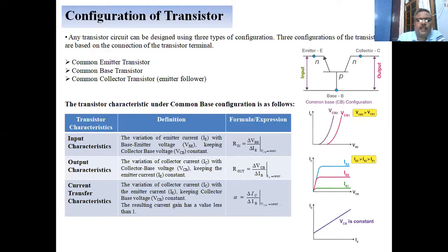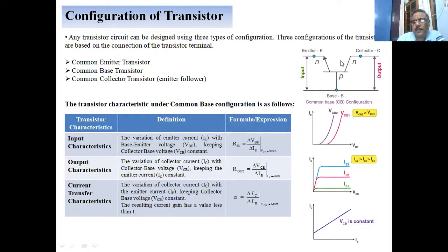The transistor is connected into a circuit in three types of modes: first is the common emitter, second is the common base, and third is the common collector. In the common base configuration, the base is common and the emitter and collector are connected to the open circuit.